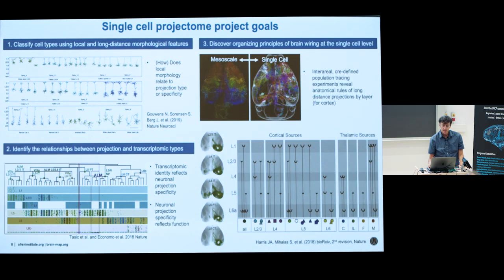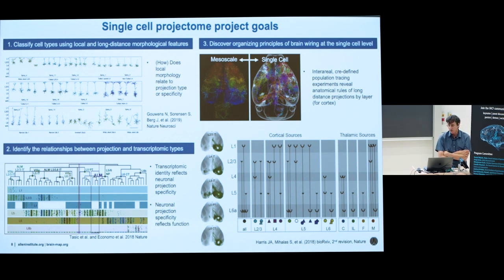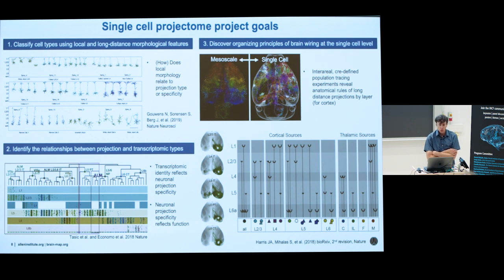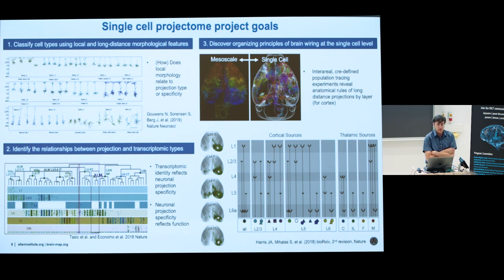Of course, you'd like to understand the cellular level of projections. It seems unequivocal that connectivity will be a very strong determinant of cell type identity, and that it will be very important to understand. Unfortunately, it's also one of the hardest to get, because you need cellular level resolution and typically long-range axonal connectivity, which means big imaging of whole brains.